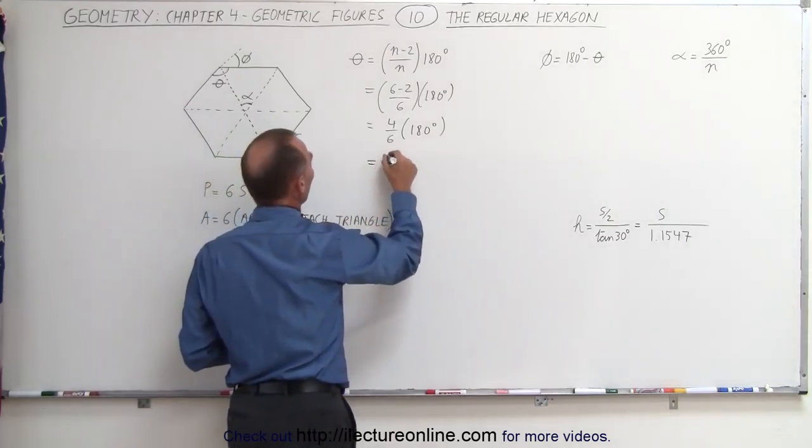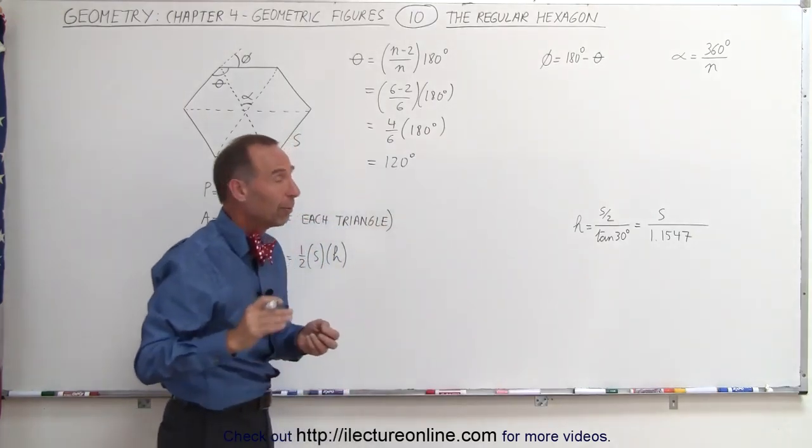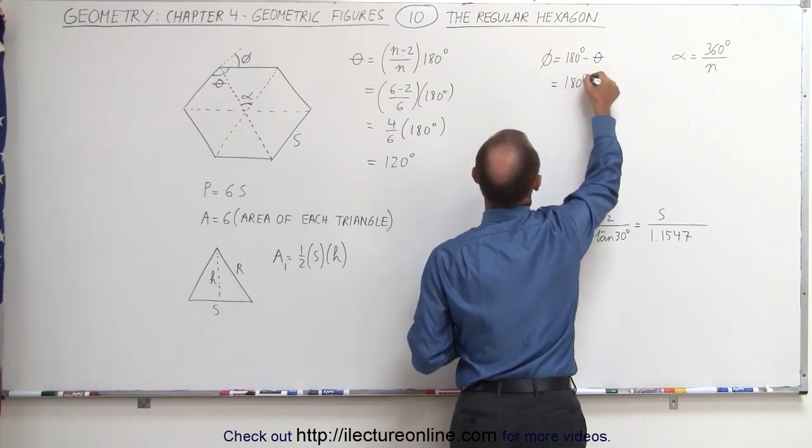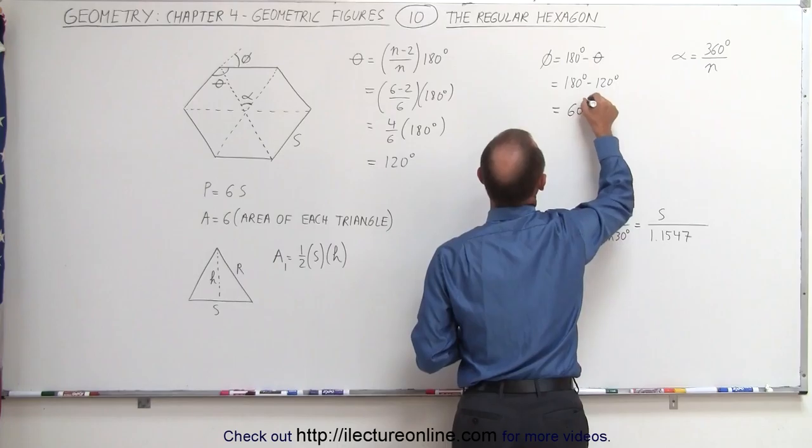That is equal to 120 degrees, which means to find the supplementary angle phi, that is going to be equal to 180 degrees minus 120 degrees, so that's equal to 60 degrees.